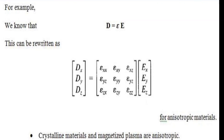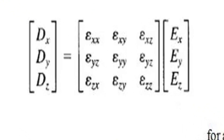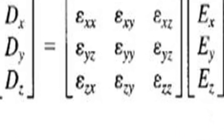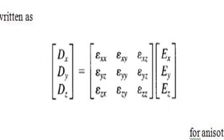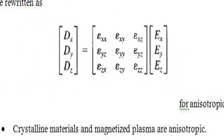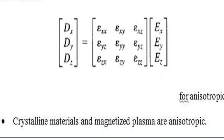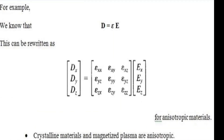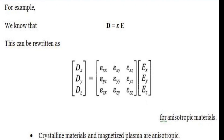This matrix represents the general equation D = εE for anisotropic materials. Note: there is a small print mistake in the second row — it should be εyx, not εyz. Crystalline materials and magnetized plasma are examples of anisotropic materials.